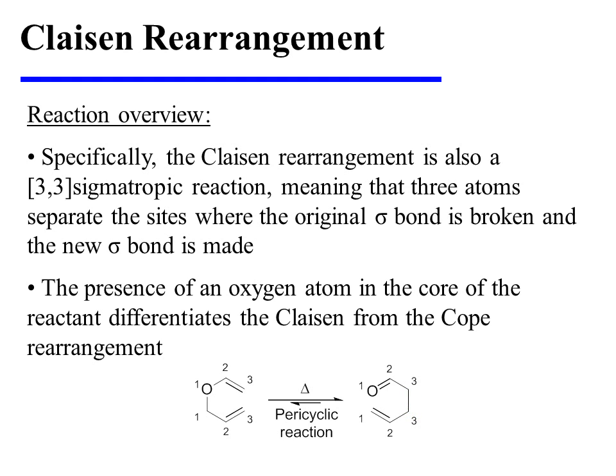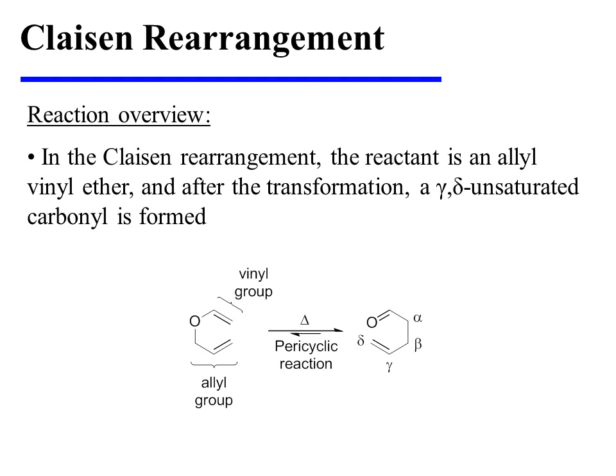The presence of an oxygen atom in the core of the reactant differentiates the Claisen from the Cope Rearrangement. Due to the presence of that oxygen atom, we can say that the reactant for a Claisen Rearrangement is specifically an allyl-vinyl ether. And after the transformation, a gamma-delta unsaturated carbonyl is formed.